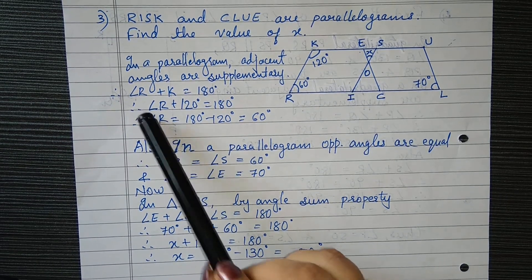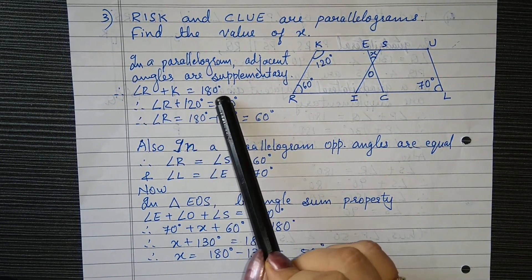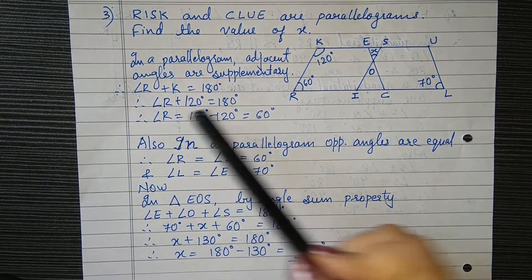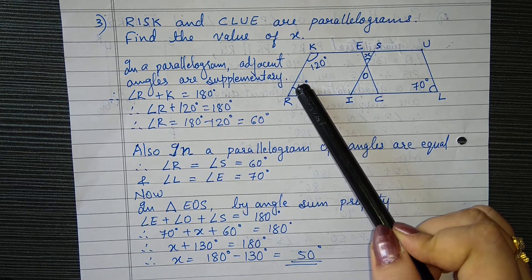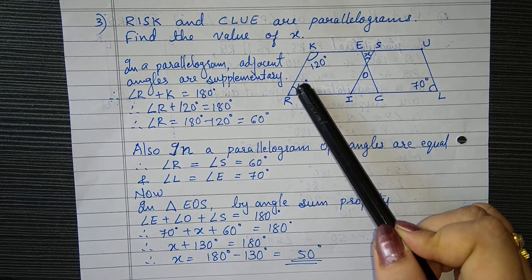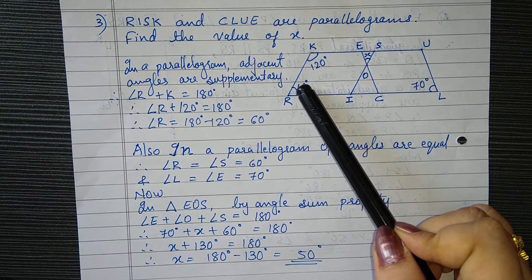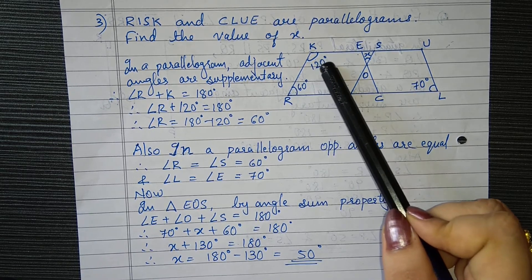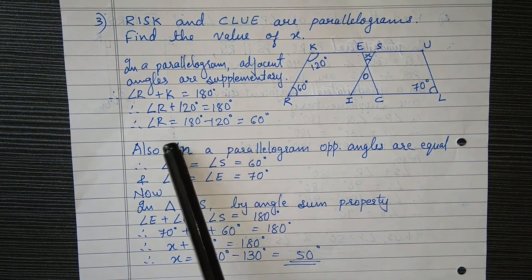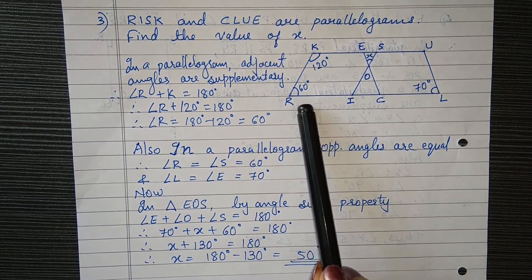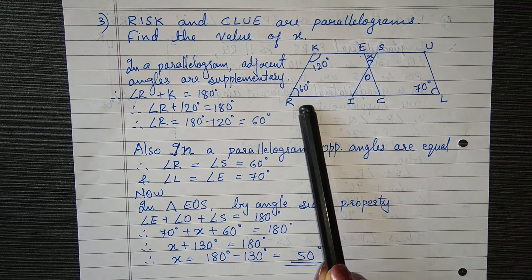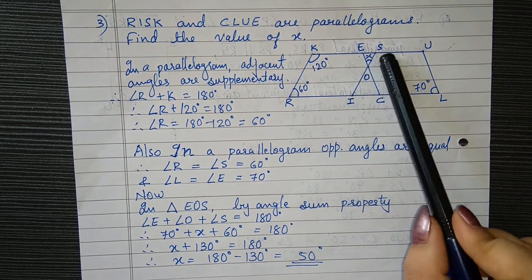So here, angle R and angle K are adjacent angles. Adjacent angles of a parallelogram are supplementary, so angle R plus angle K equals 180 degrees. We know the value of angle K is 120 degrees, so angle R will be 180 minus 120, which is 60 degrees.